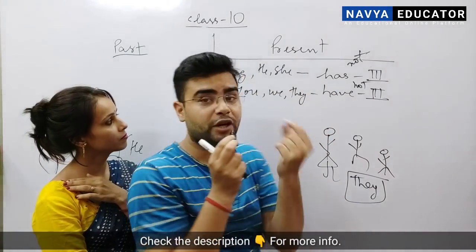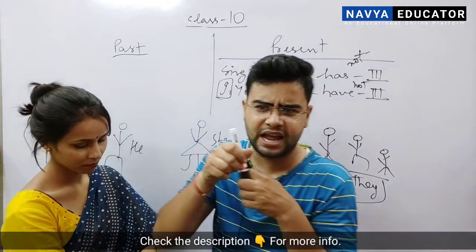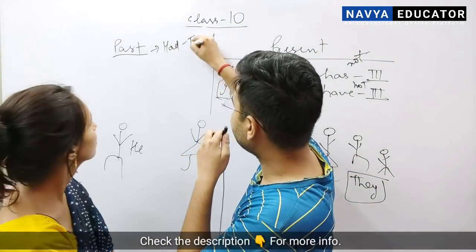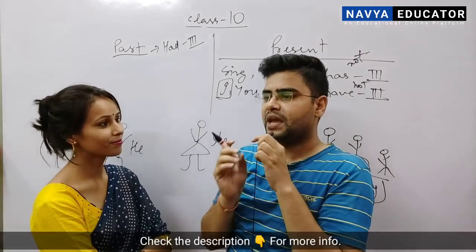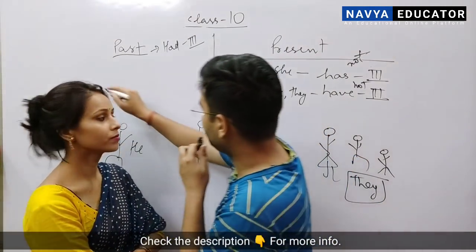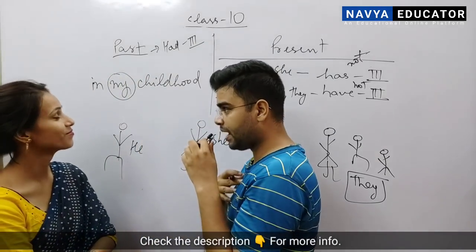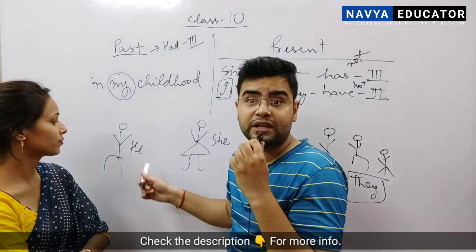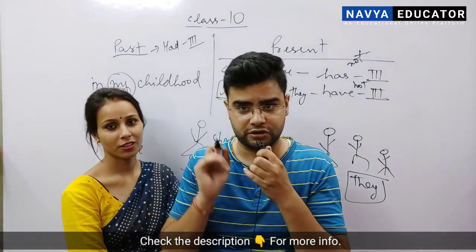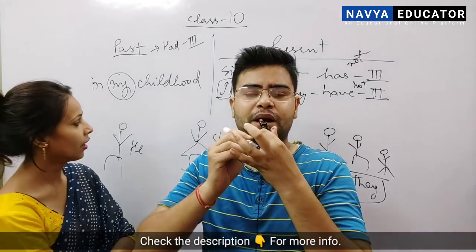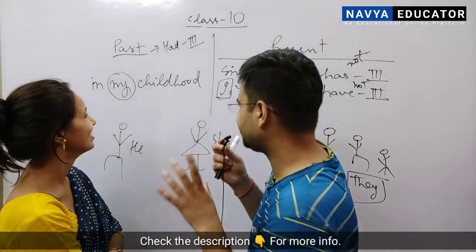If a singular person has done it, then we use 'has'; otherwise 'have.' There was confusion between 'has' and 'have.' Now, 'had' uses the third form. So: I had, you had, we had done it. Now we will use one word — 'in my childhood.' If it was my childhood, your childhood, his childhood, her childhood, their childhood, our childhood — remember this.